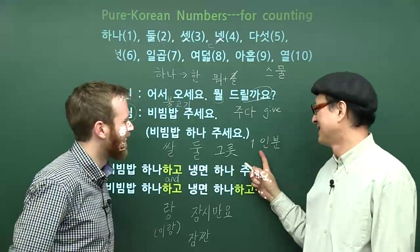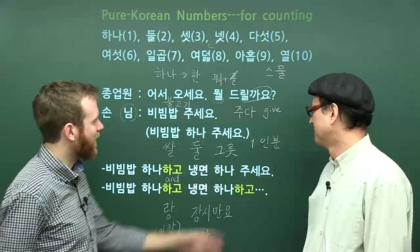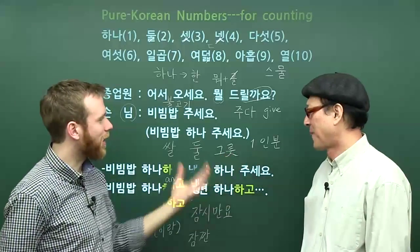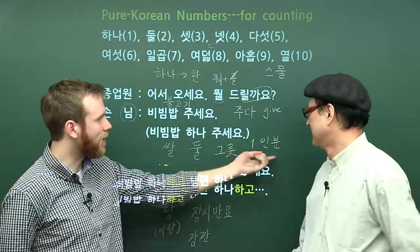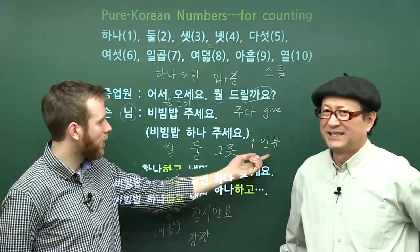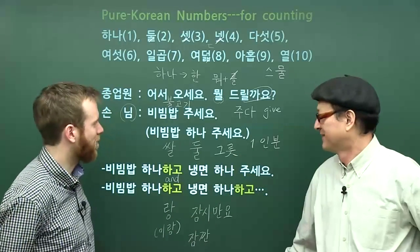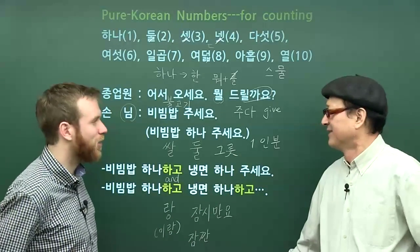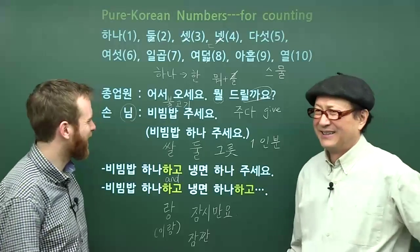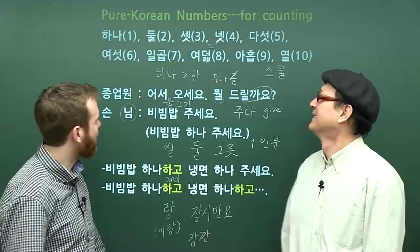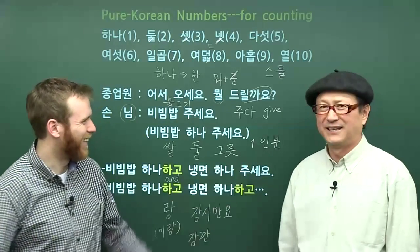These pure Korean numbers don't help us for ordering by number of people — that uses Sino-Korean numbers, which come from Chinese. So I wouldn't say 하나, I'd say 일인분. We'll get to that eventually.